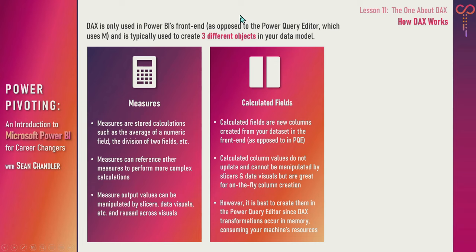Calculated fields are new columns we add to our data from the front end using DAX — for example, lumping several field values into grouped categories. I typically do these things in the Power Query Editor so that these columns are loaded into the data model alongside any other transformations. Since DAX transformations occur in memory and consume more machine resources, performing these transformations in the Power Query Editor is highly recommended. It's also important to note that calculated column values written in DAX don't dynamically recalculate based on user interaction the way measures do.